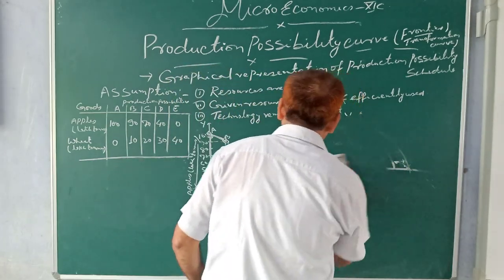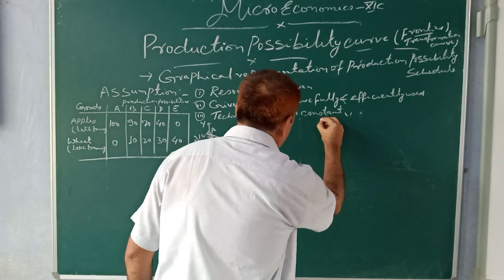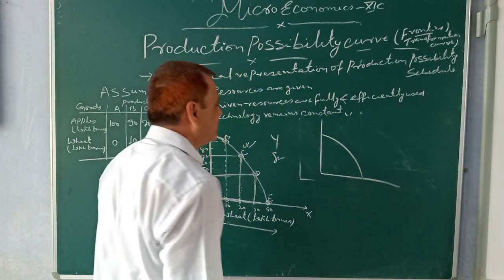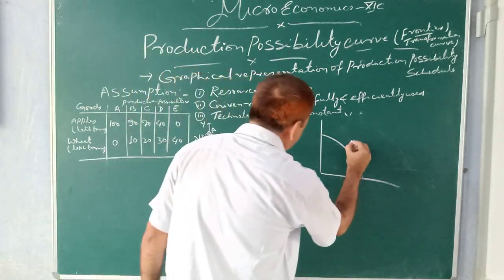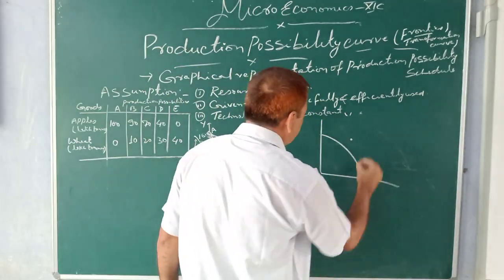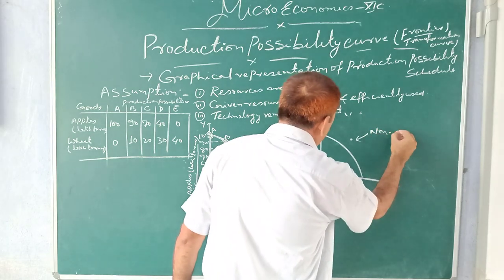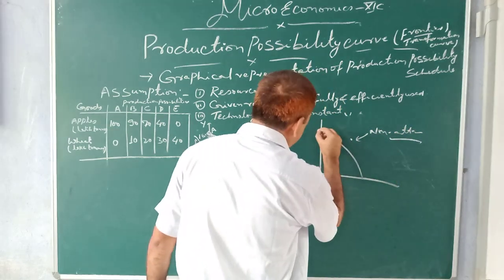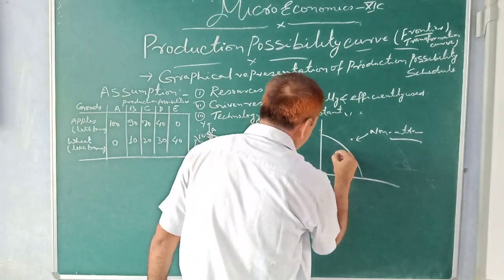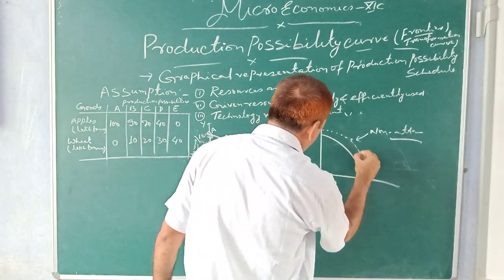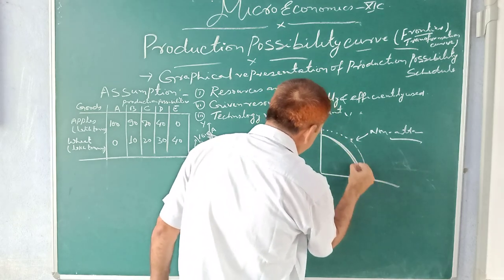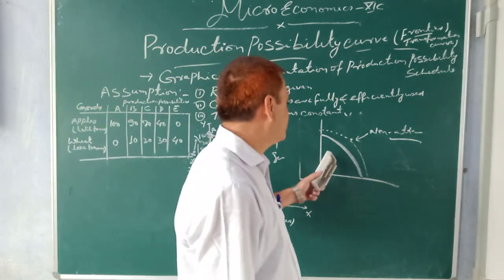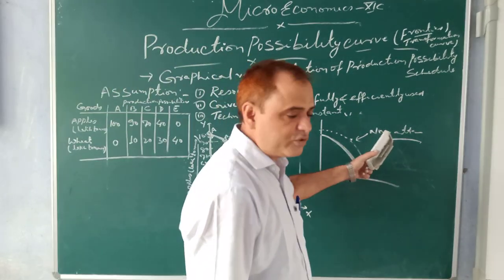In this combination you can see that this point is not possible. This is called non-attainable because all the resources we are using are limited. It cannot go beyond - this is our potential. Our maximum production can be on this curve only. That is non-attainable because our resources are constant.